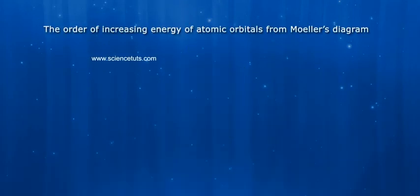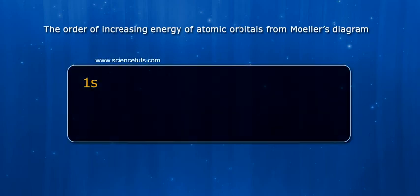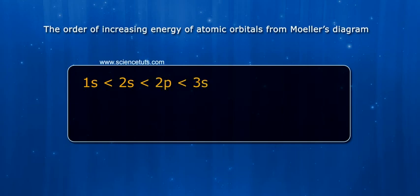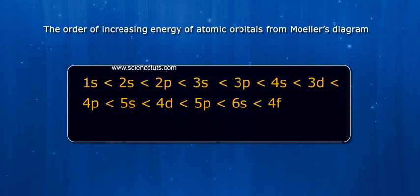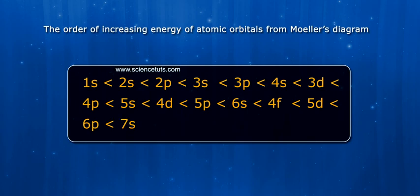The order of increasing energy of atomic orbitals from Moeller's diagram: 1S, 2S, 2P, 3S, 3P, 4S, 3D, 4P, 5S, 4D, 5P, 6S, 4F, 5D, 6P, 7S.